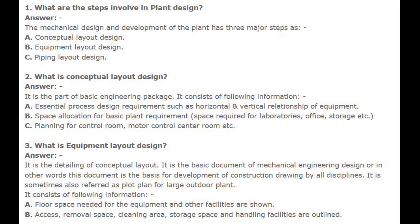Answer: It is the part of basic engineering package. It consists of the following information: a. Essential process design requirements such as horizontal and vertical relationship of equipment. b. Space allocation for basic plant requirements — space required for laboratories, office, storage, etc. c. Planning for control room, motor control center room, etc.